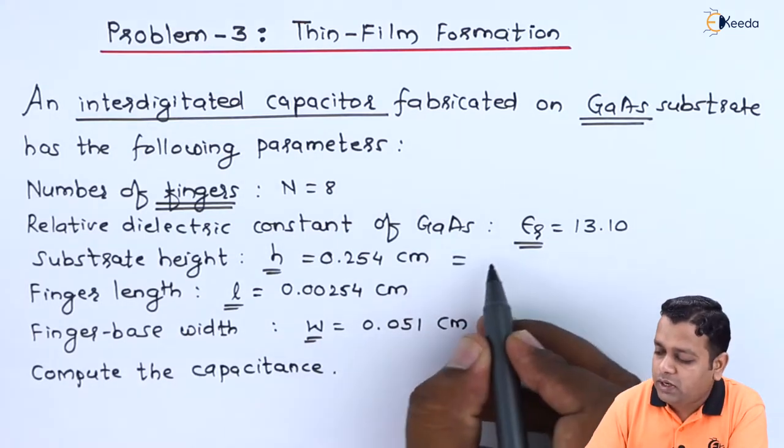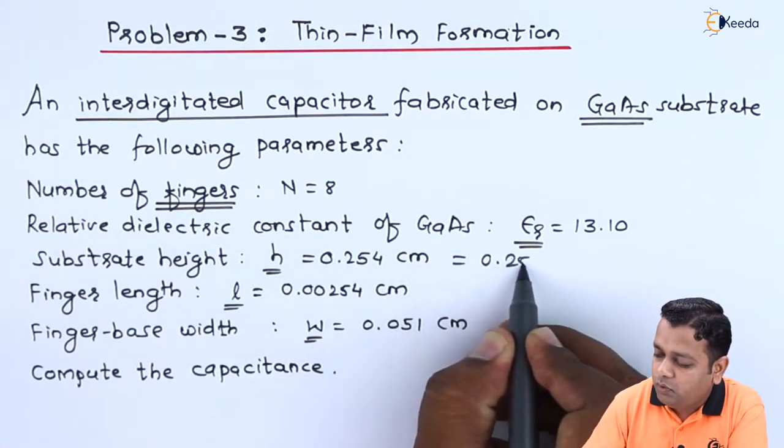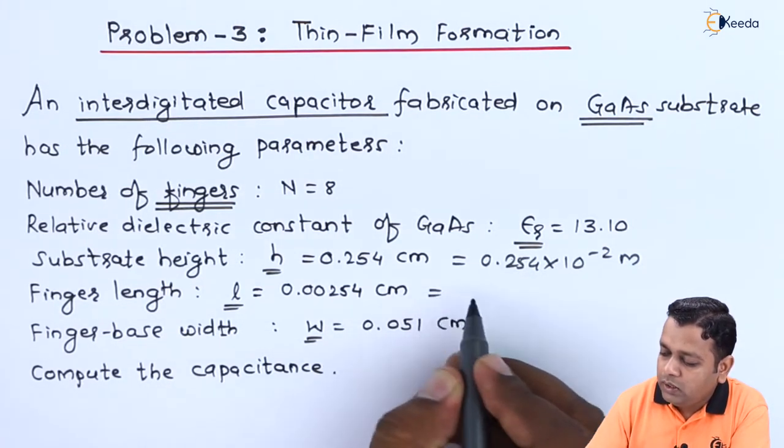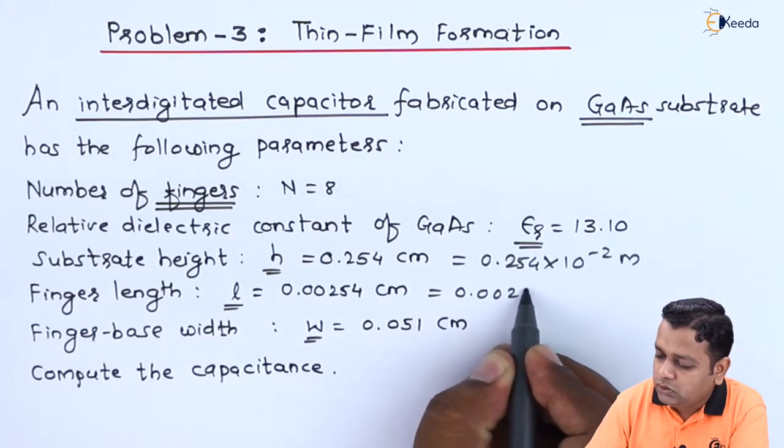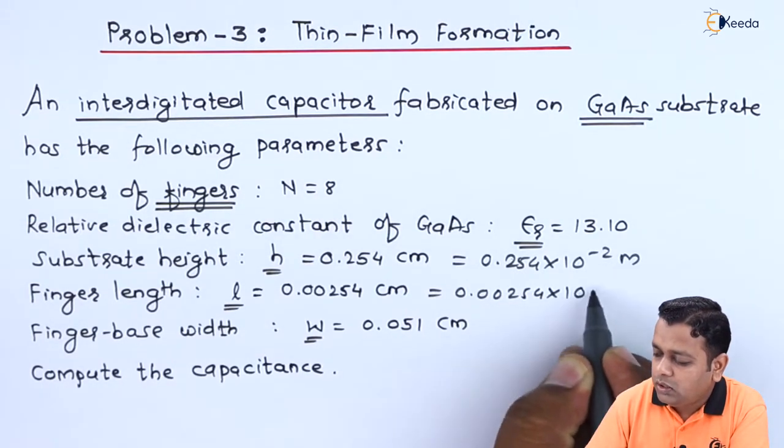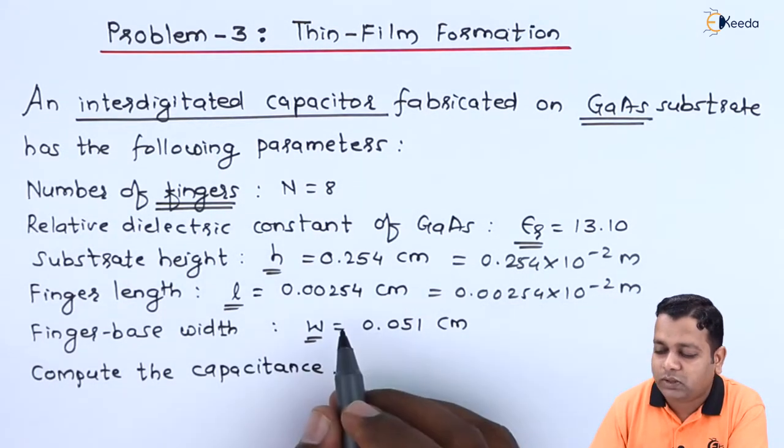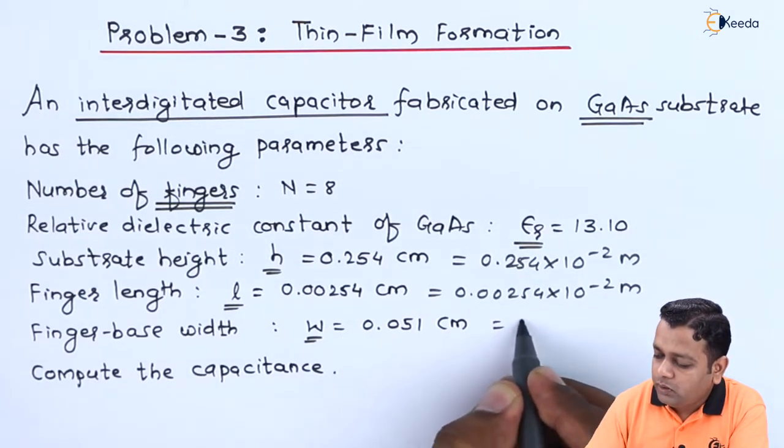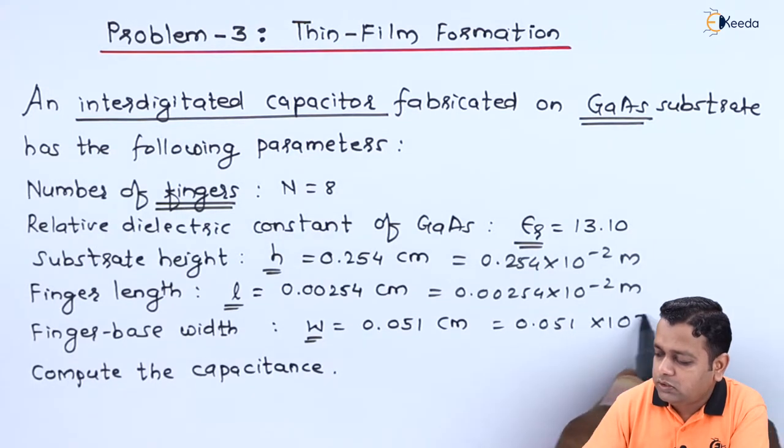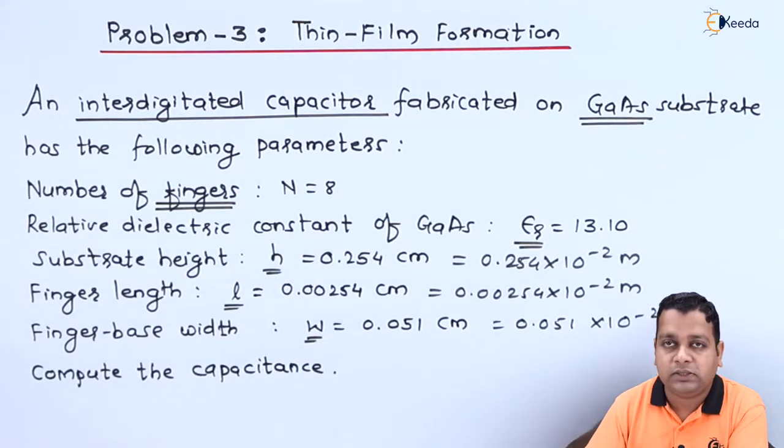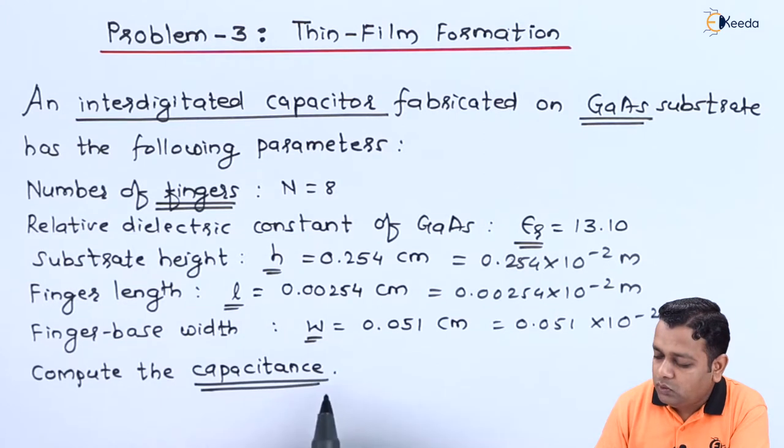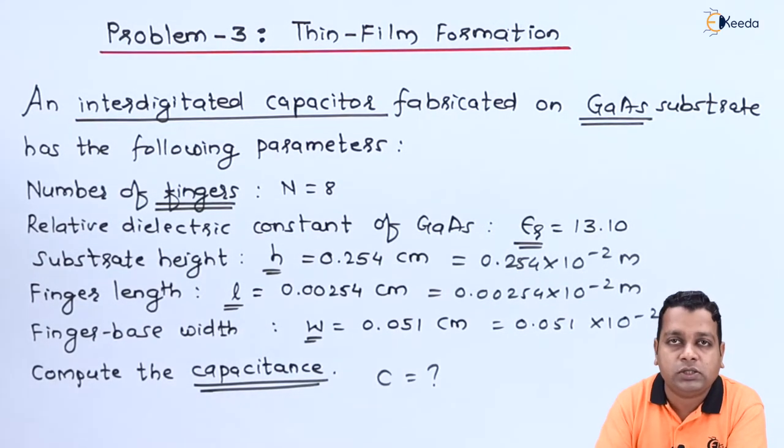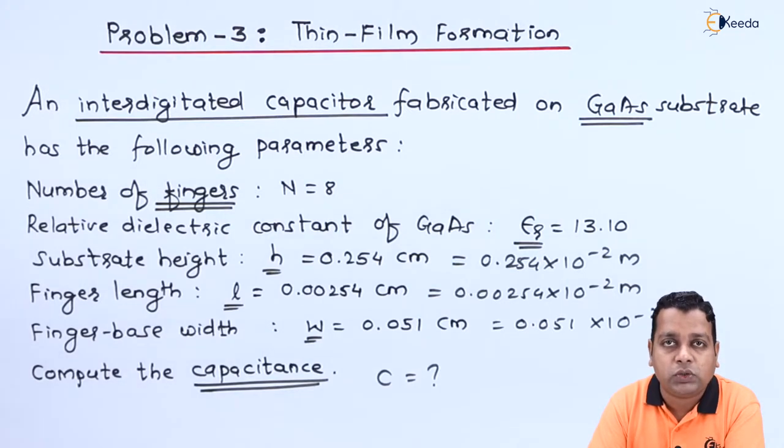If into the SI system of units, this should be 0.254 into 10 raised to the power minus 2 meters. This should be 0.00254 into 10 raised to the power minus 2 meters for the length here. Whereas the width should be 0.051 into 10 raised to the power minus 2 meters here. So let us denote the capacitance to be determined by C. So the question in this problem statement is C is equal to what?